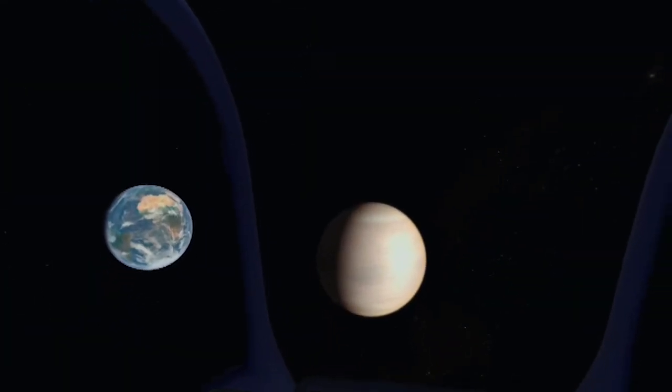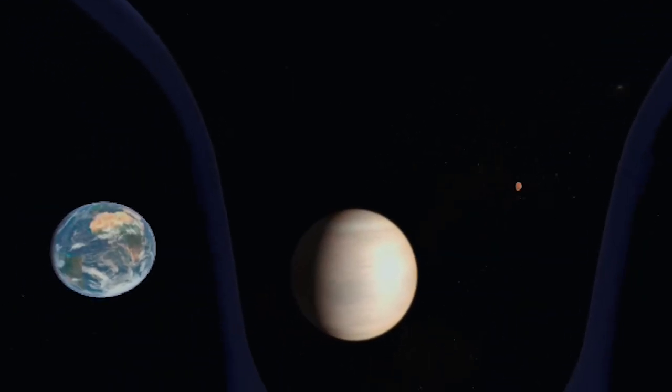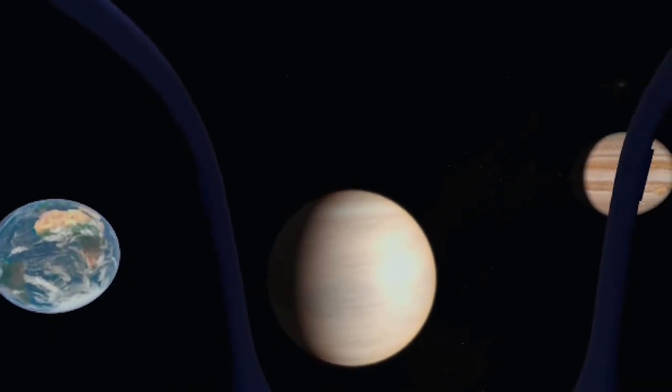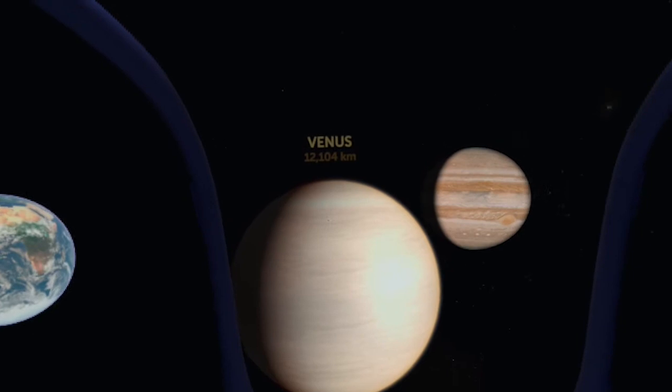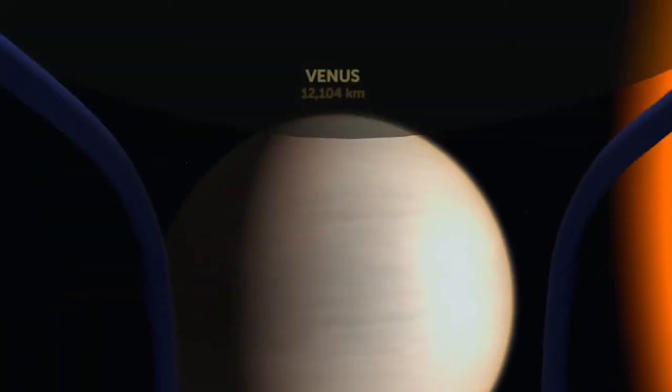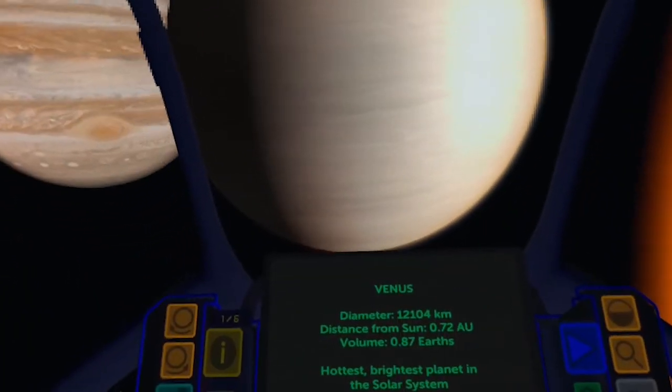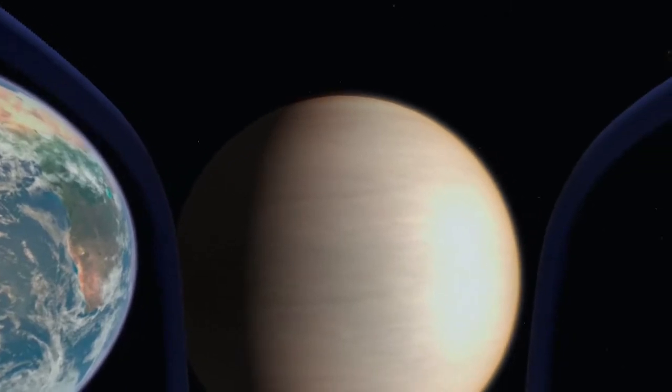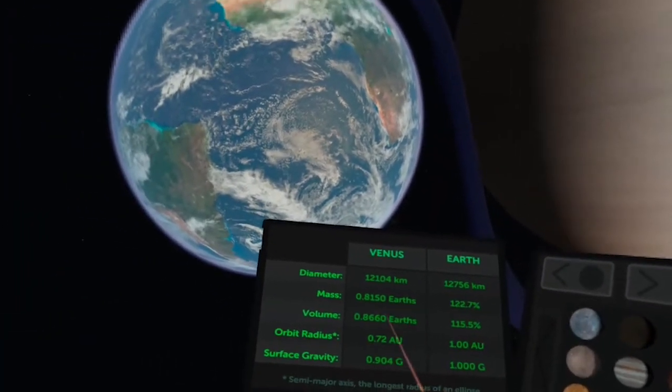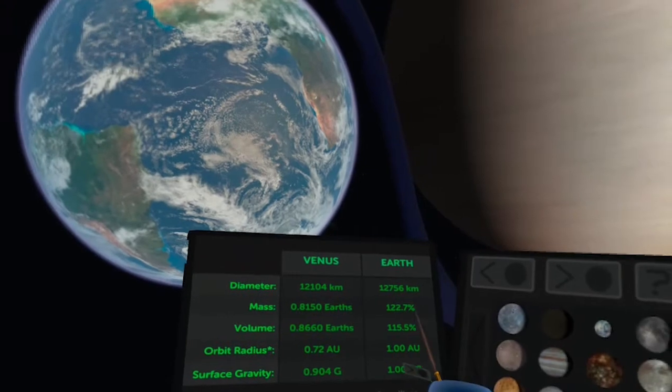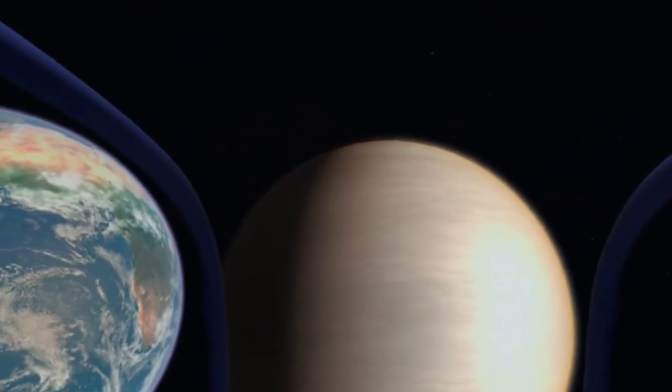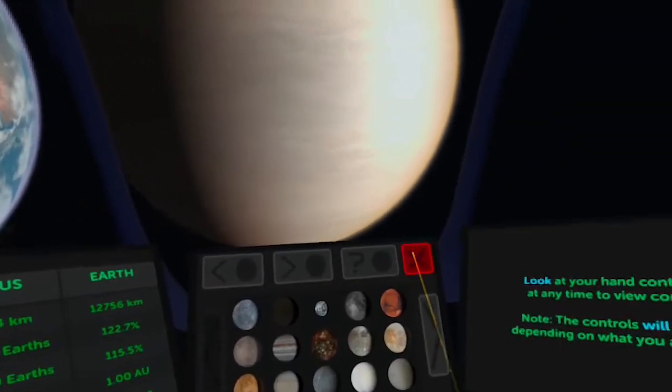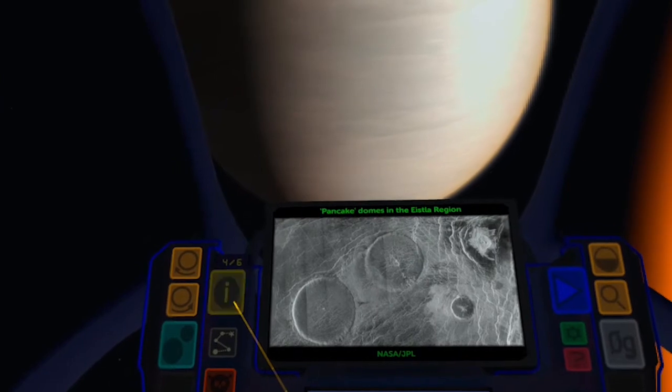So as we approach Venus, you can see there's no real features to be observed because there's just an enormous cloud cover all of the time. We cannot see the surface of Venus. Mercury has really no discernible atmosphere, so there's nothing but surface to be seen. Venus is fairly close in size to the Earth. They're very similar in diameter. Venus is just slightly smaller, but they're very close. And Venus is the most similar in size to the Earth.